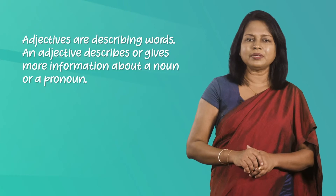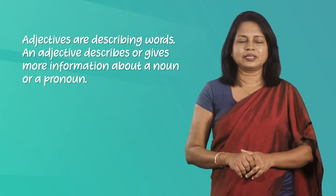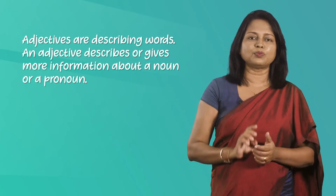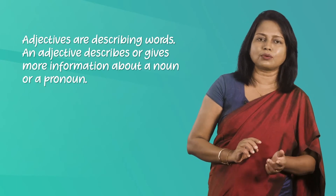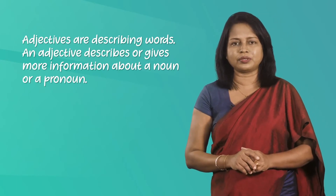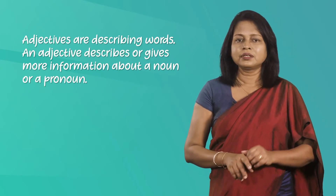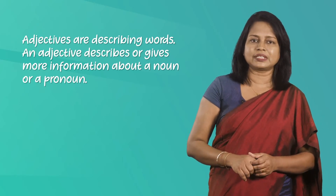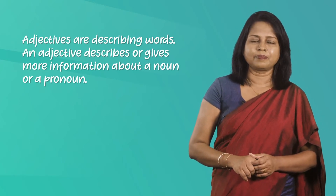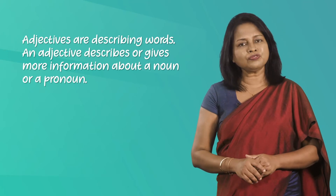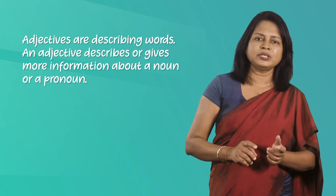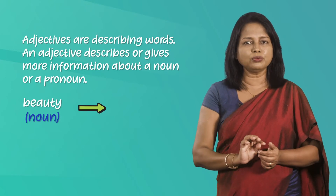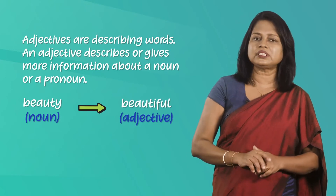Adjectives are describing words. An adjective describes or gives more information about a noun or a pronoun. Today our purpose is learning how to form adjectives correctly. How are adjectives formed? For example, how is the noun 'beauty' converted to 'beautiful', which is an adjective?